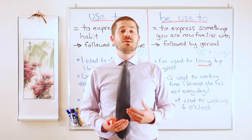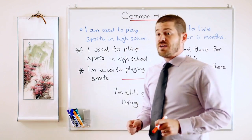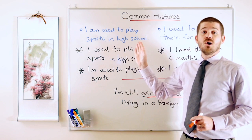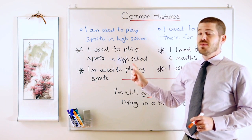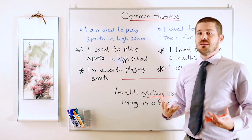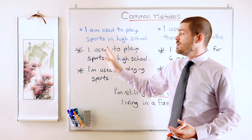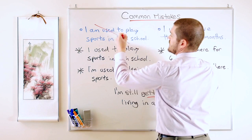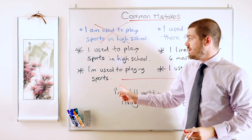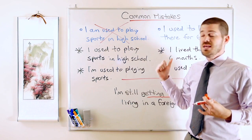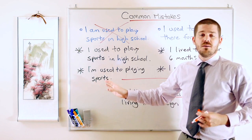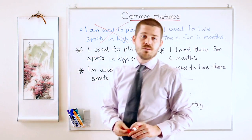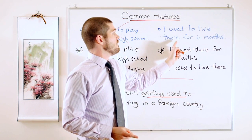Now let's look at some common mistakes. I'm going to erase the whiteboard and go through errors people make with these grammar points. The first mistake: 'I am used to play sports in high school.' This is incorrect. When we talk about past habits with 'used to,' we do not use 'be.' The correct sentence is 'I used to play sports in high school.' Alternatively, 'I'm used to playing sports' is correct but has a completely different meaning.